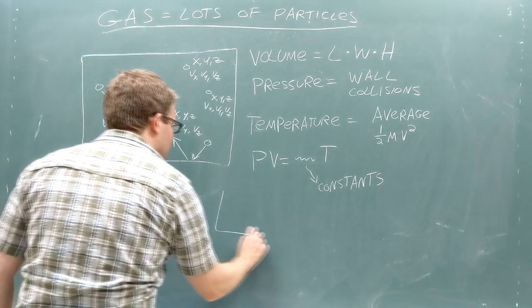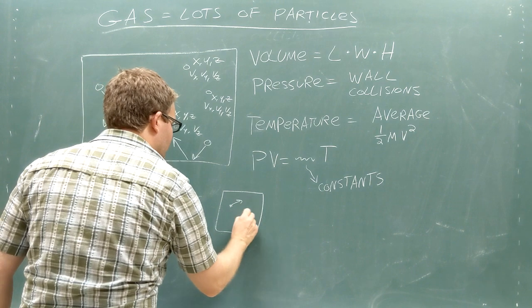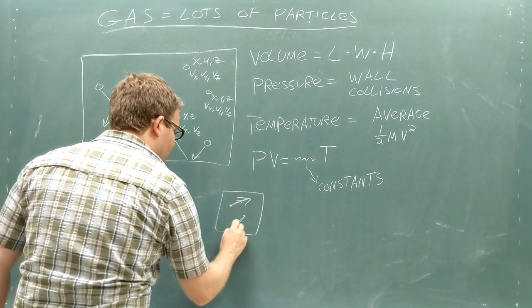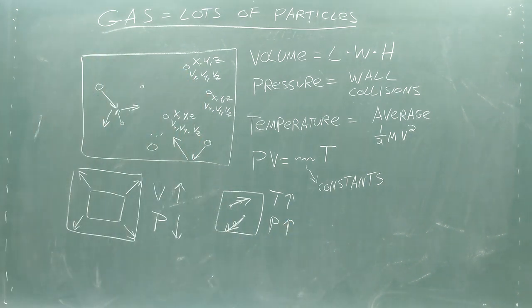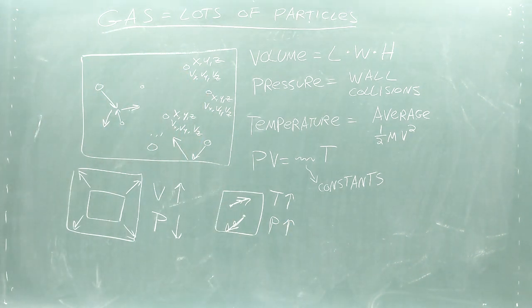The ideal gas law also says that if you increase the temperature, meaning you make the particles move faster while the volume stays consistent, the pressure must increase. This makes sense because the particles will be striking the walls of the box with a higher speed.